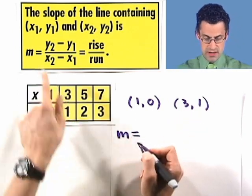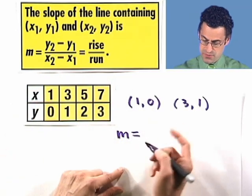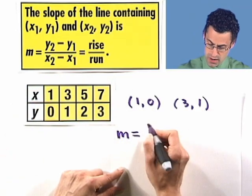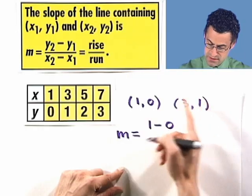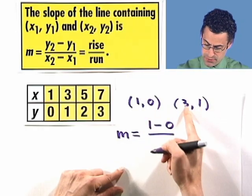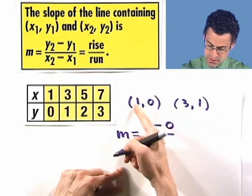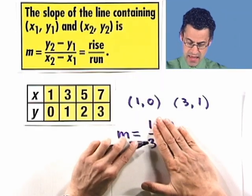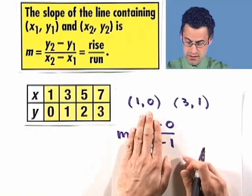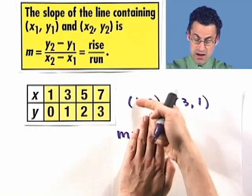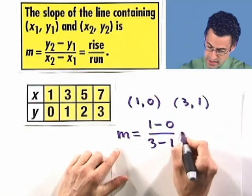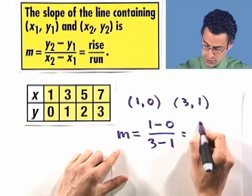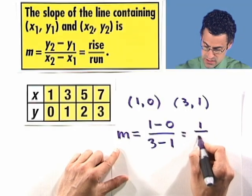So the slope will be the change in y, so the rise, which is going to be 1 minus 0 divided by 3 minus 1. Is this really correct? Let's check it out and see. That should be the x comma y for the second point. This should be the x comma y for the first point. It looks good. Okay. And so what does this equal? Well, this equals 1 divided by 2.